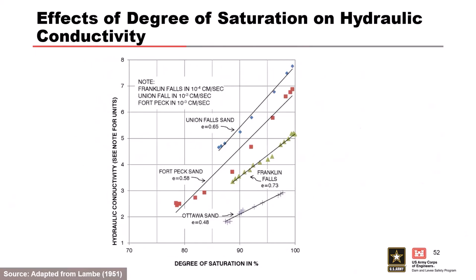A big consideration — particularly for partially saturated soils and transient analyses — is degree of saturation. As your soil becomes less saturated, the permeability goes down and can go down quite dramatically. When degree of saturation is less than about 85%, Darcy's Law is not applicable. When it's greater than 85%, most air is in the form of small bubbles in the water and you can approximately apply Darcy's Law, but you must understand how permeability changes with changes in degree of saturation.